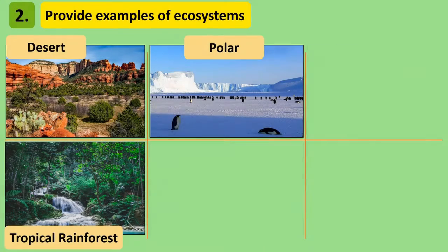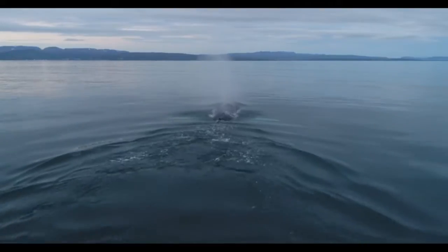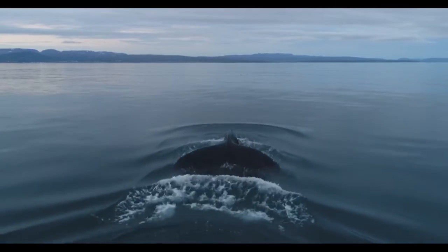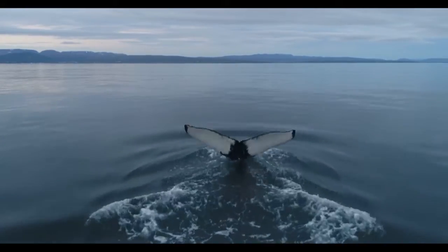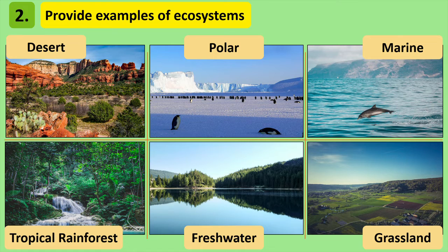Freshwater ecosystems consist of all the world's rivers, lakes and bogs because they contain water with no salt. Marine ecosystems consist of oceans and seas because their water is full of salt, meaning different types of living things live there. Finally, the ecosystem we'll concentrate on are grasslands. These ecosystems are where grass is the most abundant plant type, and right now much of Ireland is in grassland.